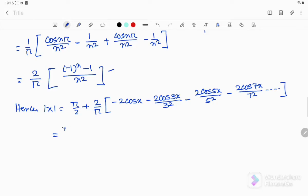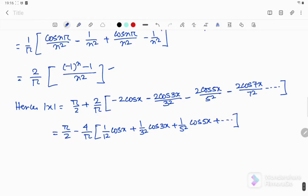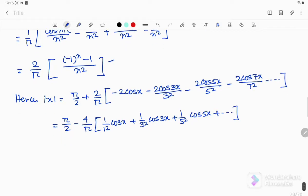Now we can further simplify it. Pi by 2. Let's take this out. So this is 1 by 1 square cos x plus 1 by 3 square cos 3x plus 1 by 5 square cos 5x and so on. So this is the Fourier series expression for mod x. Hope you have understood.